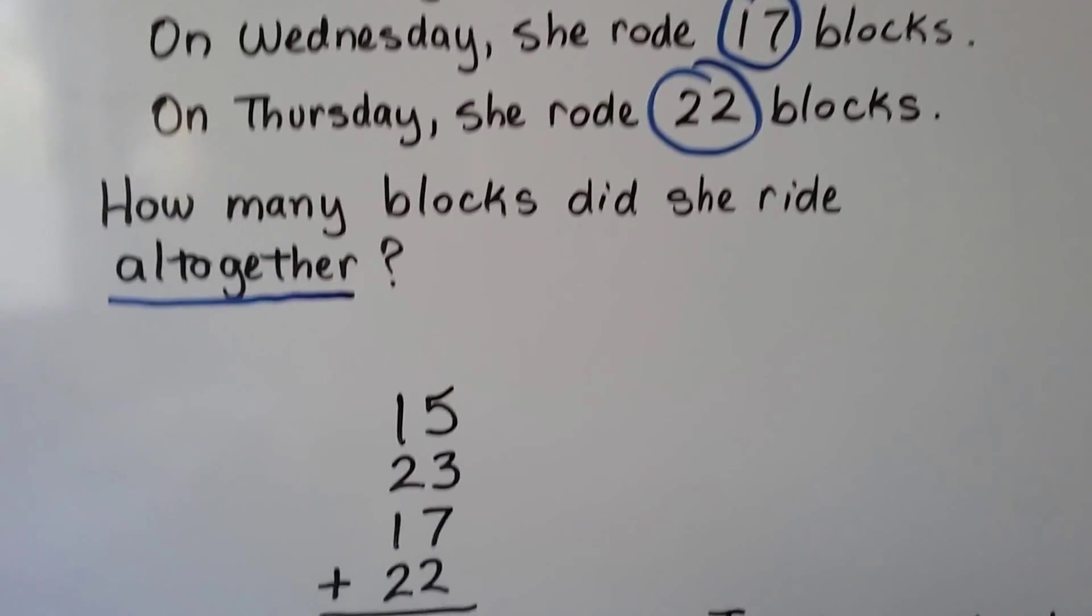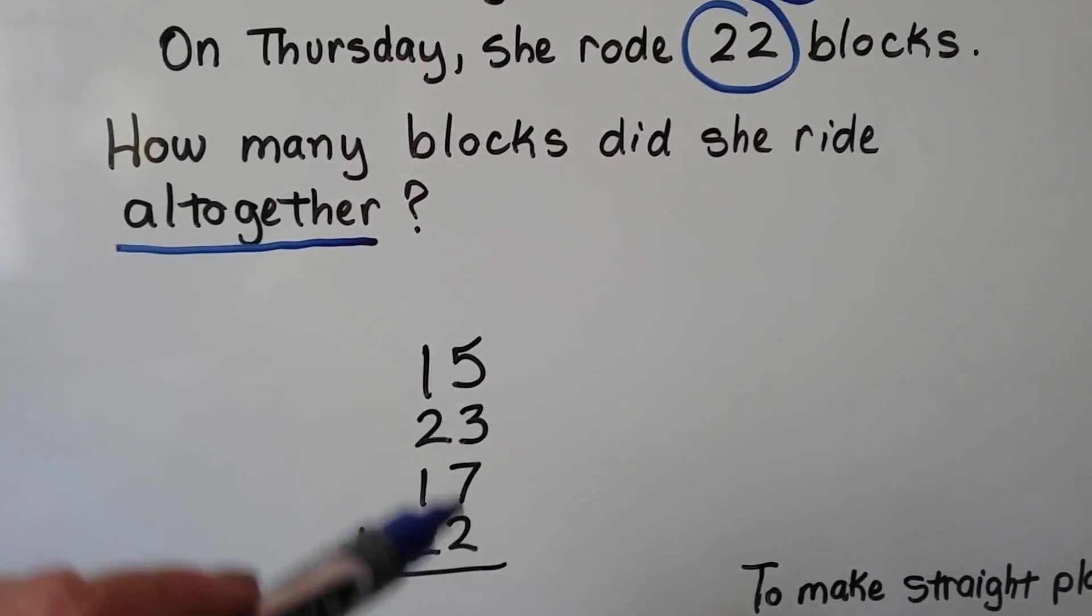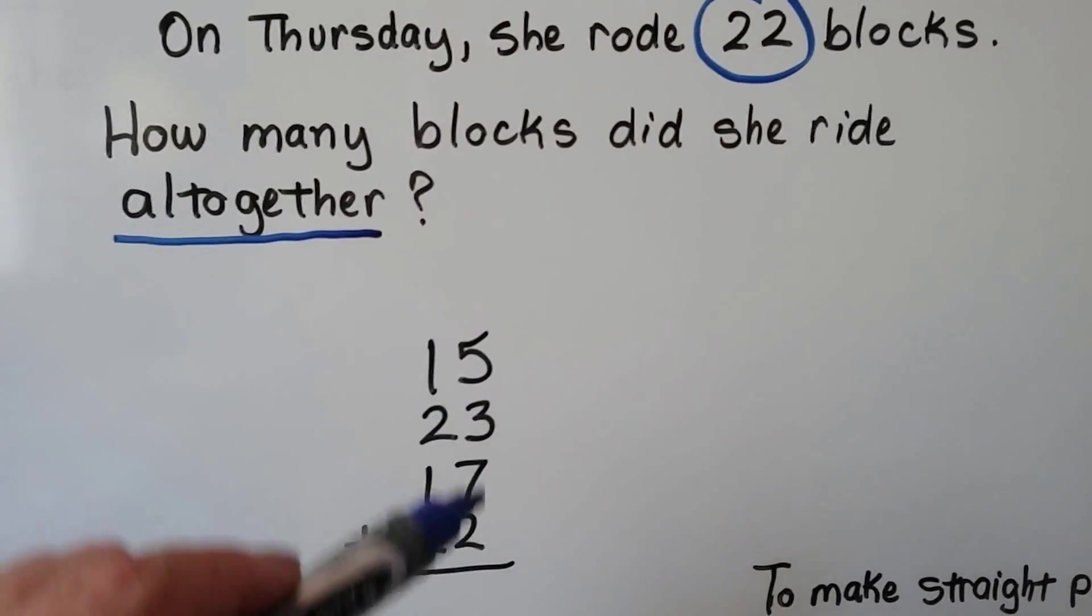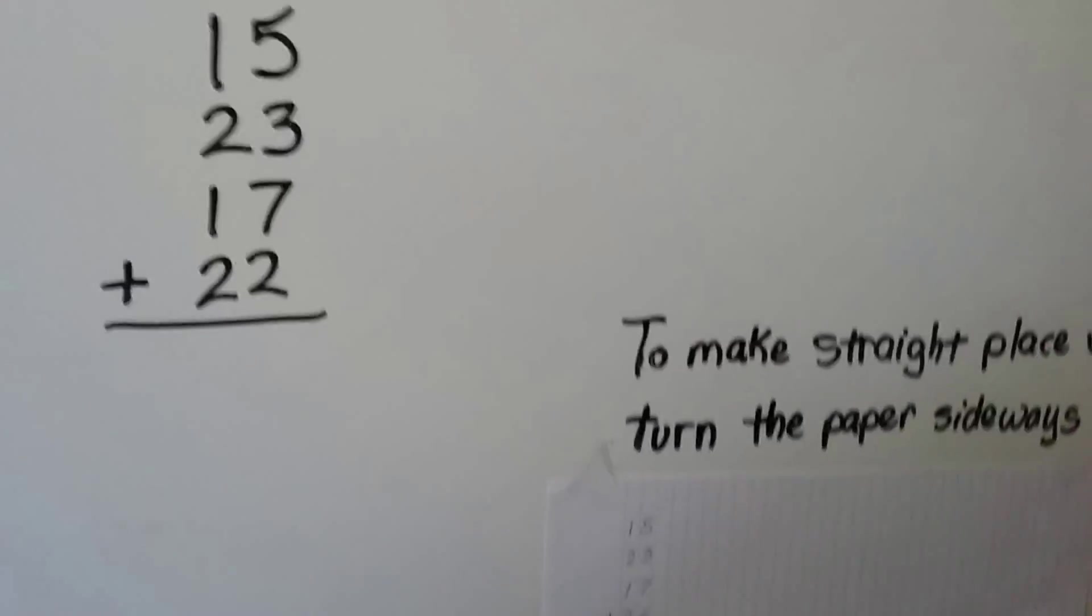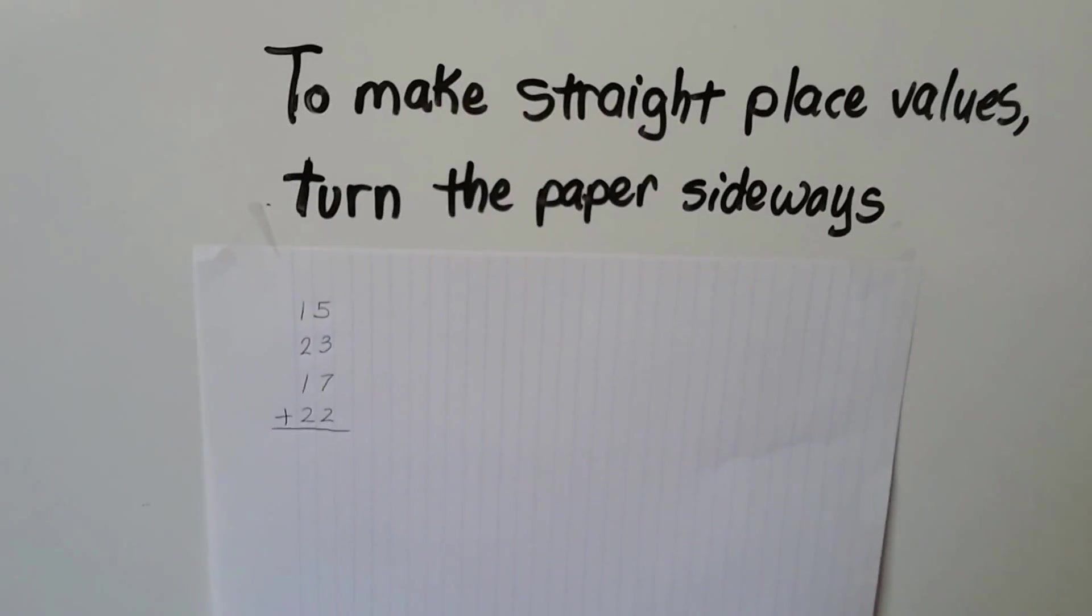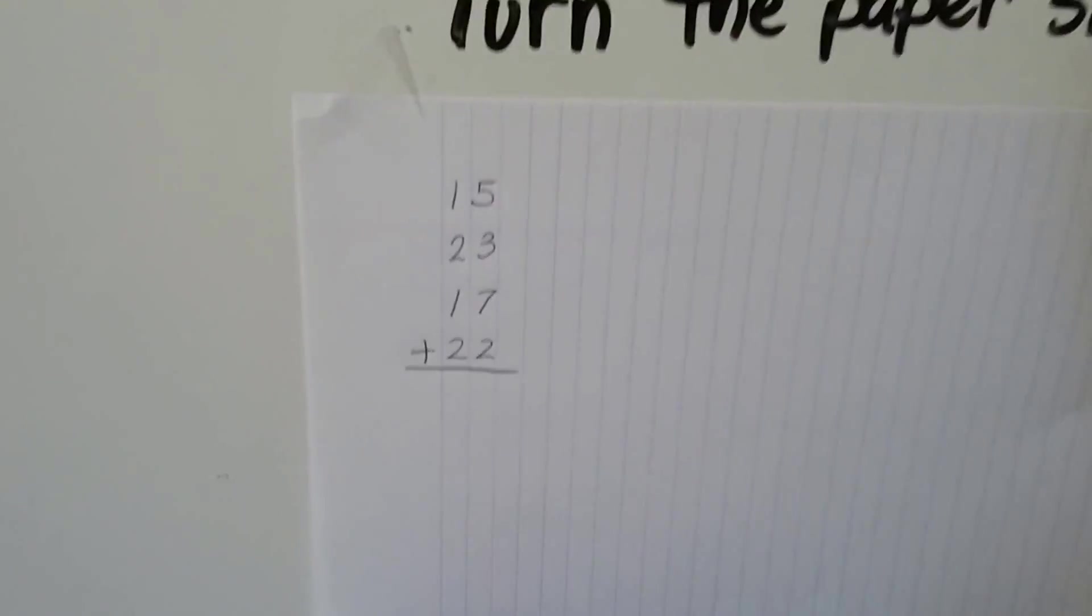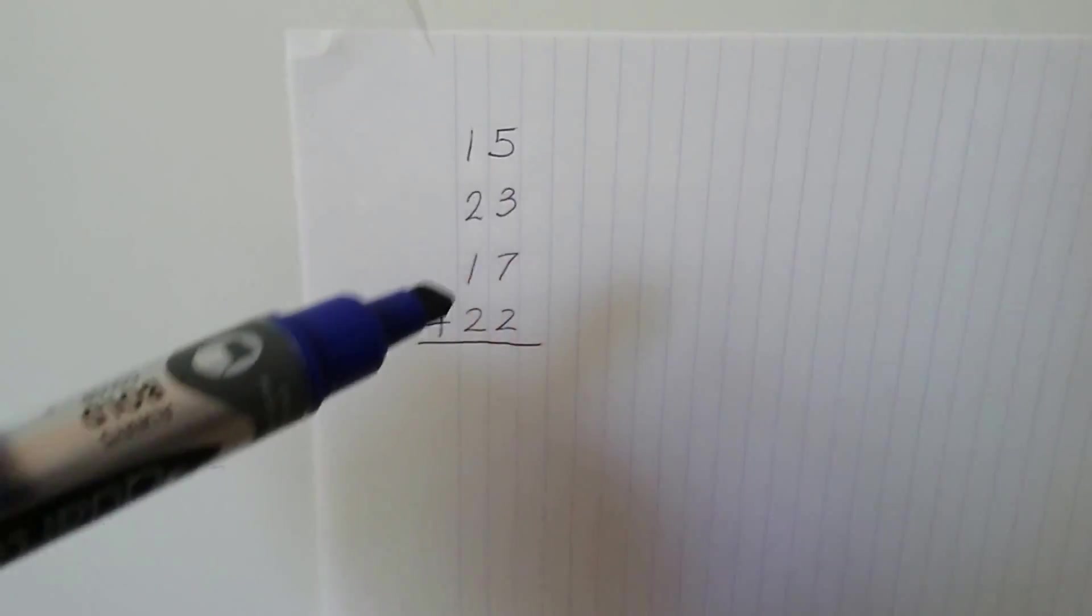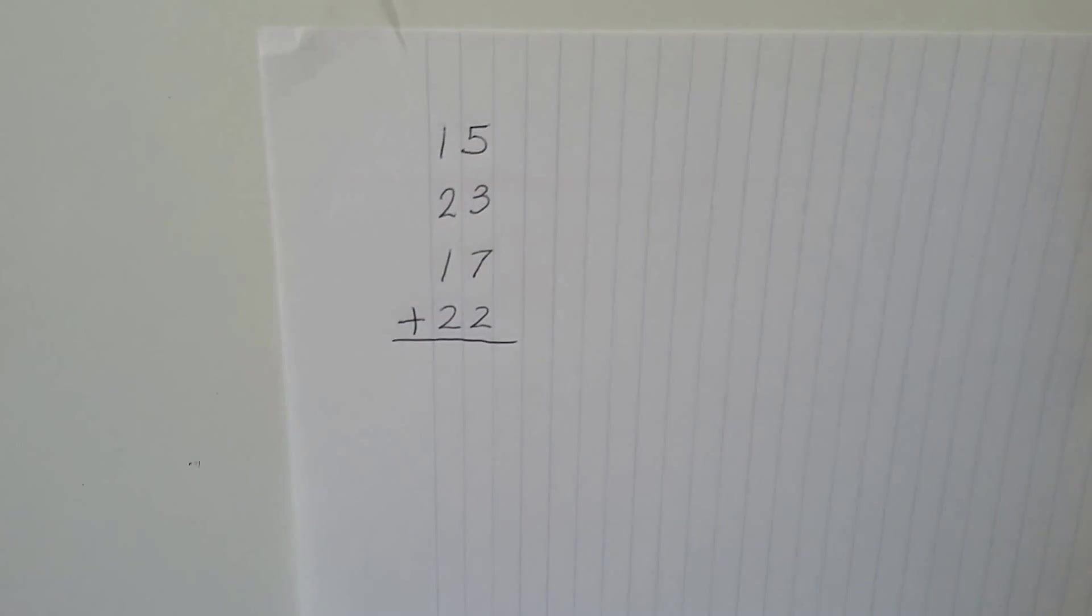We make sure we put them in the correct place value. We want them to be all lined up nice and pretty like that. If you want, you can make straight place values by turning a paper sideways and you use each line for a place value. That way you keep your columns straight.